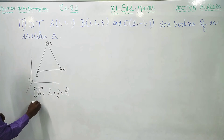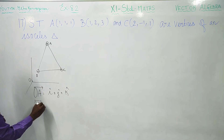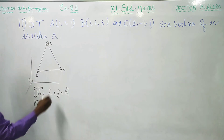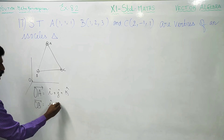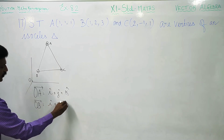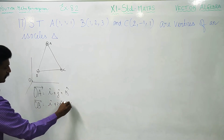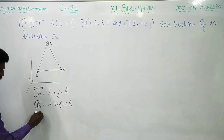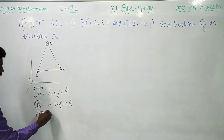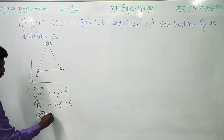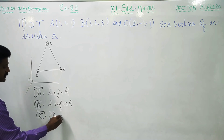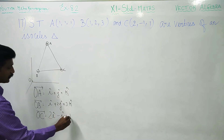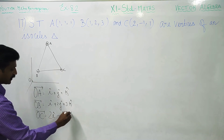Coming to OB vector: OB vector is 1i + 2j + 3k. Then OC vector: OC vector is 2i − j + k.